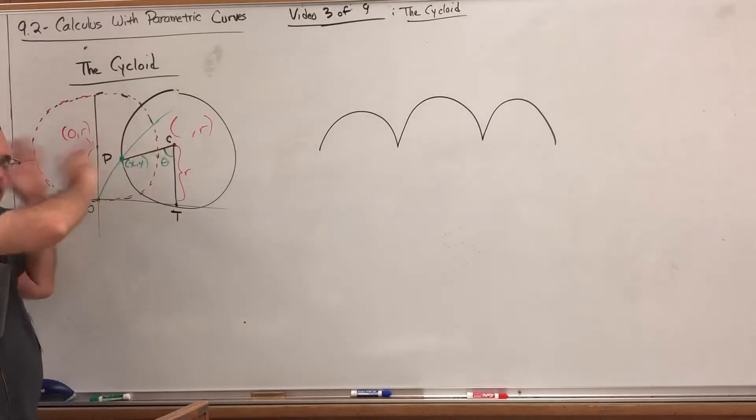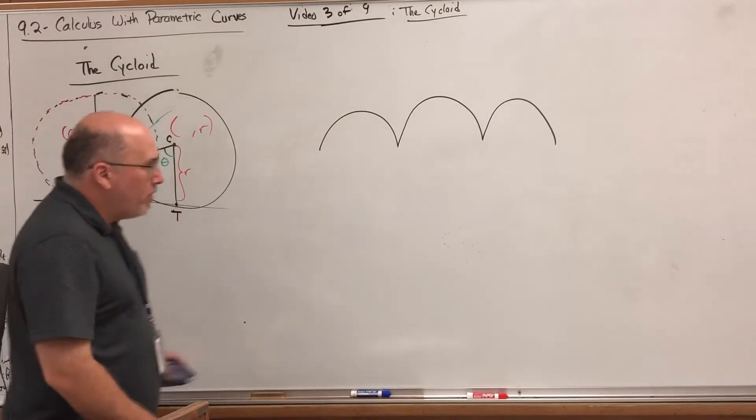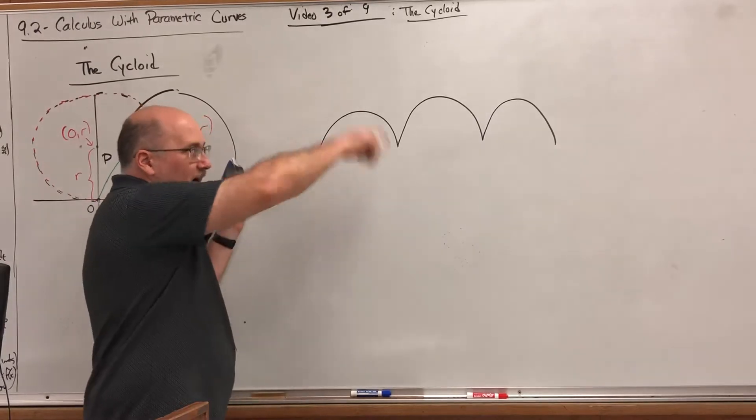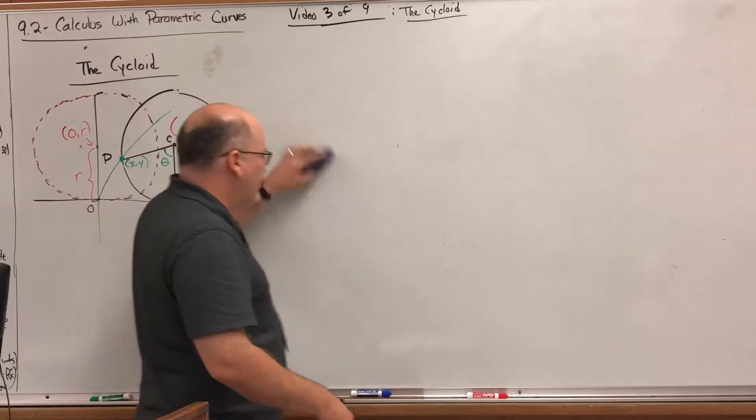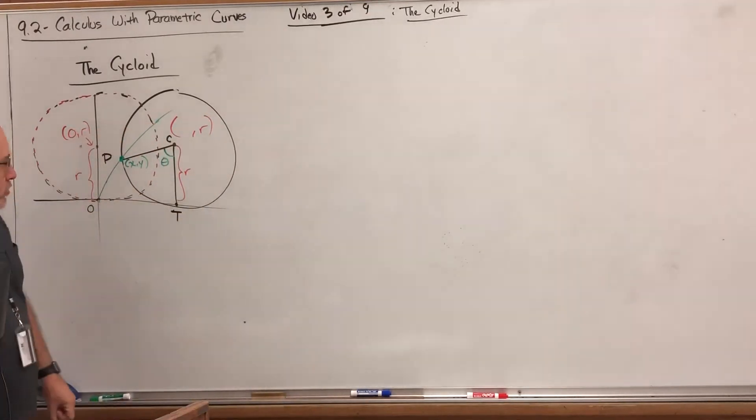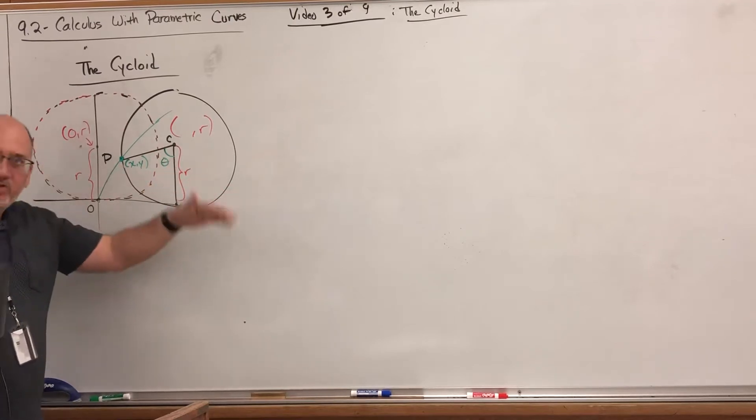So we're expecting a graph that kind of looks like this when we keep track of where this point is on the circle as we roll it from left to right. But we want to come up with the equations that define this curve parametrically. The first thing we have to do is decide what the parameter should be.